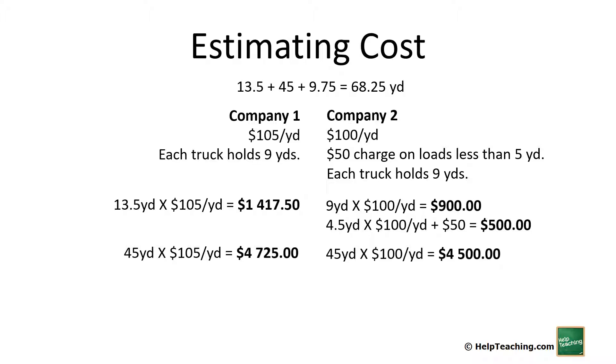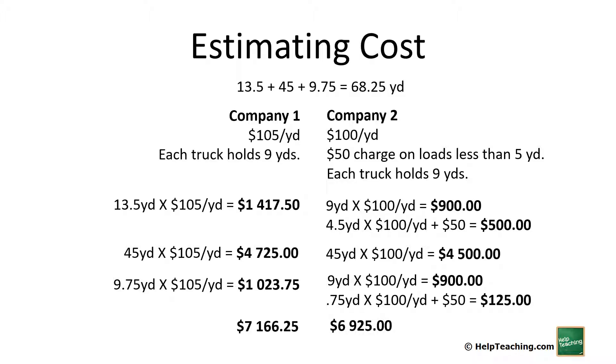Now the slab floor: for Company 1, 9.75 times $105 equals $1,023.75. For Company 2, 9 yards at $100 per yard is $900. This load will also have a short load of 0.75 yards, so 0.75 times $100 plus the $50 surcharge brings us to $125. When we add these up, Company 1 totals $7,166.25 and Company 2 totals $6,925. Even with the extra surcharges, Company 2 is slightly cheaper.